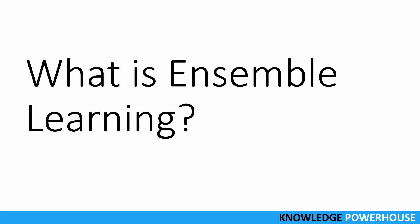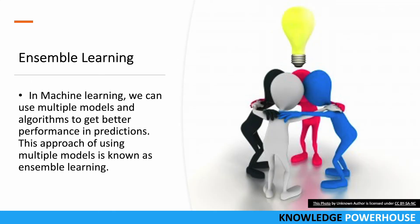Ensemble learning is an important concept in machine learning. In machine learning we can have multiple models and multiple algorithms. What we can do is combine multiple models and algorithms to get better performance in predictions. This approach of combining multiple models or algorithms is known as ensemble learning. Basically, the sum total result of all the models together may be better than the result of any single model.